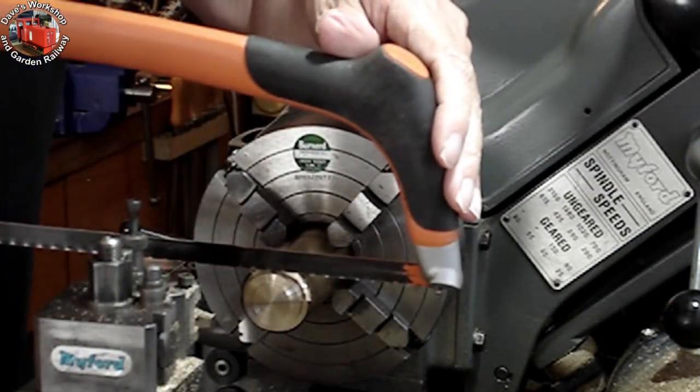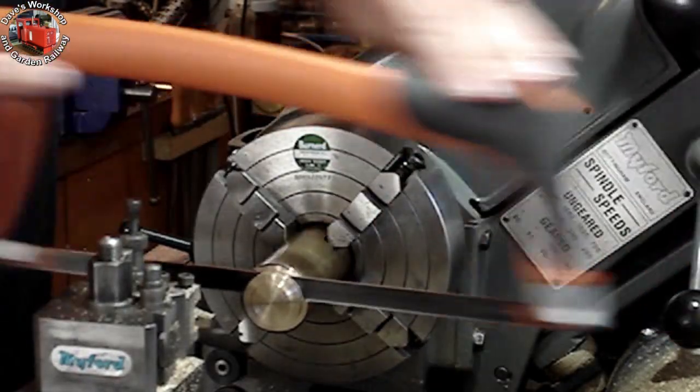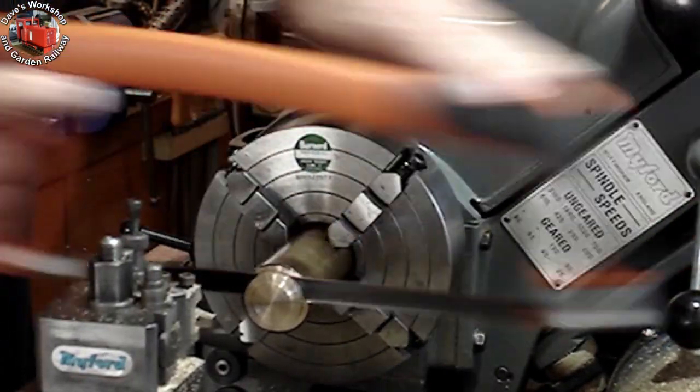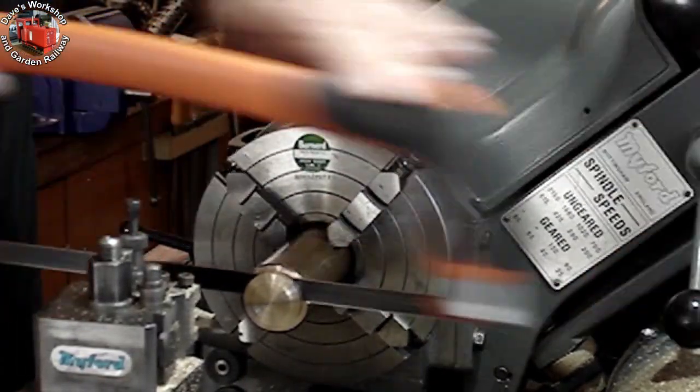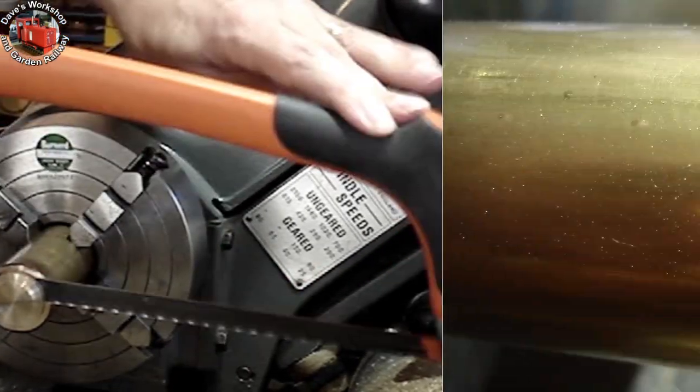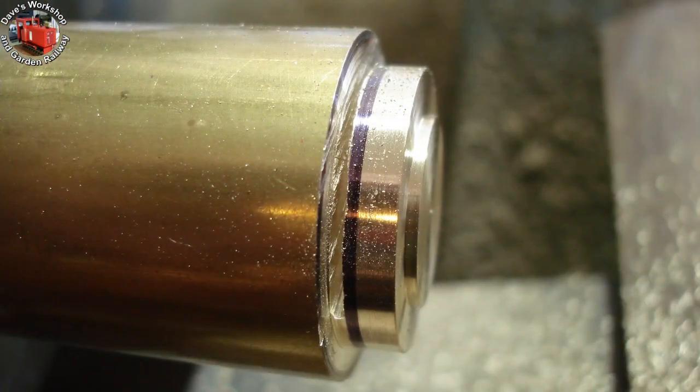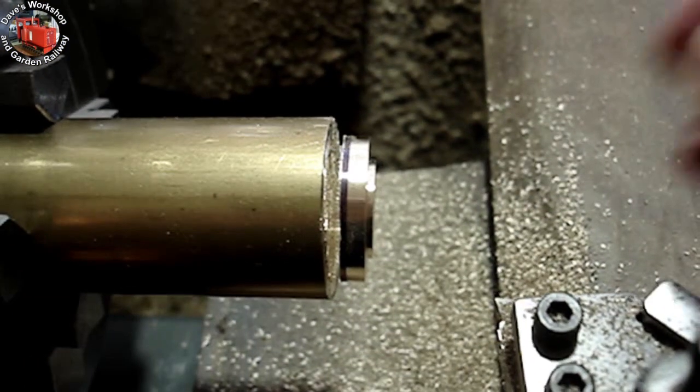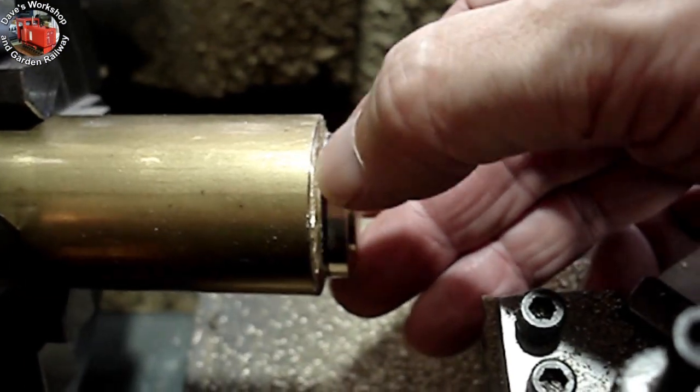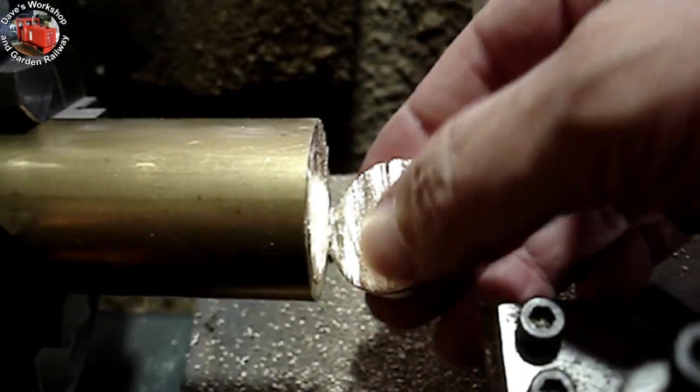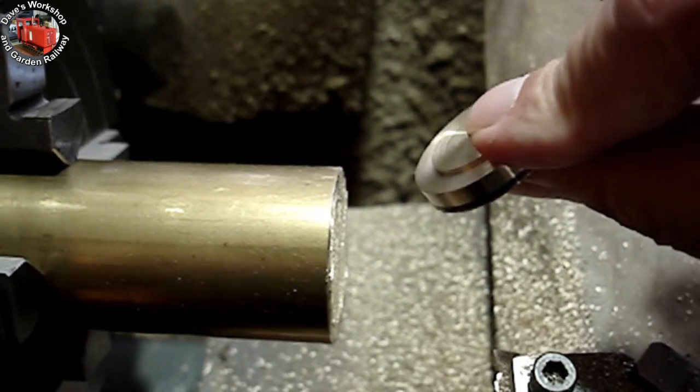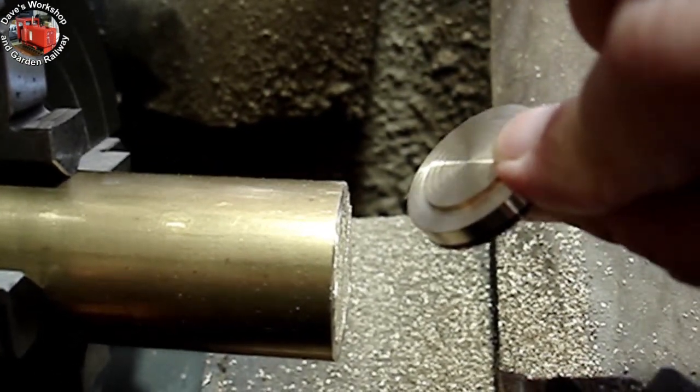I'm hack sawing the piece off to save material and because the overhang is too great for a parting tool. Here's the cut, halfway through, to the line. The best part of the whole cut.